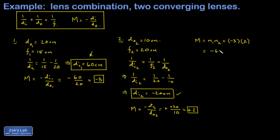From our ray diagram we had predicted a magnification of 6.3, and the analytical result is 6 — that's an acceptable difference. A ray diagram should be used as a check on your work, not as a replacement for the actual analytical solution.